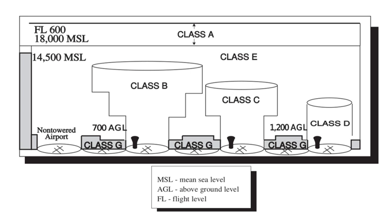National Security Areas (NSAs) consist of airspace of defined vertical and lateral dimensions established at locations where there is a requirement for increased security and safety of ground facilities. Flight in NSAs may be temporarily prohibited by regulation under the provisions of Title 14 of the Code of Federal Regulations Part 99, and prohibitions are disseminated via NOTAM. Pilots are requested to voluntarily avoid flying through these depicted areas.